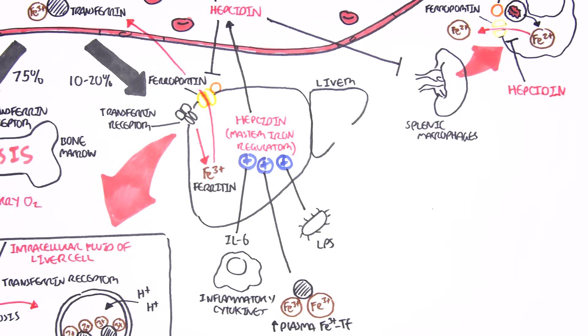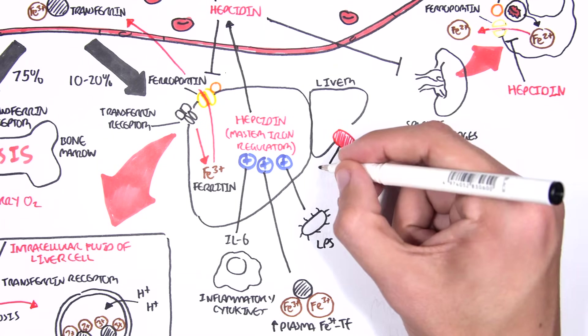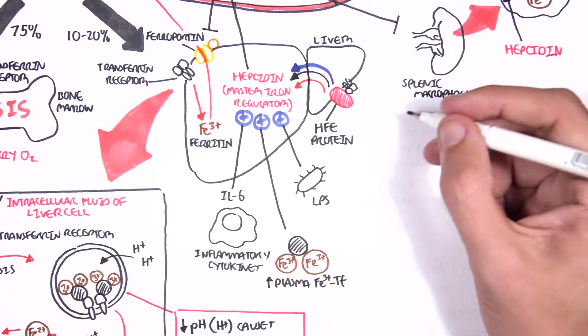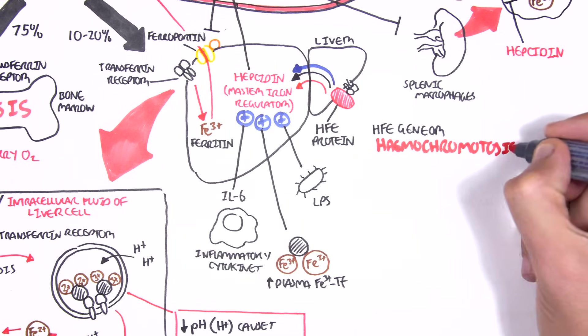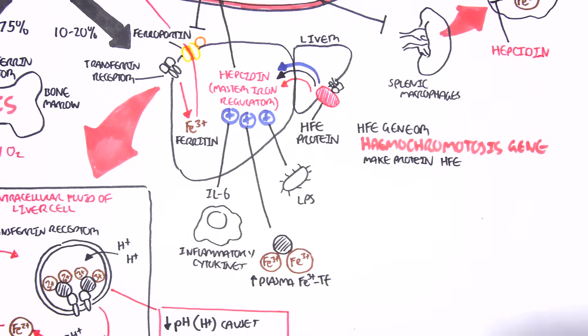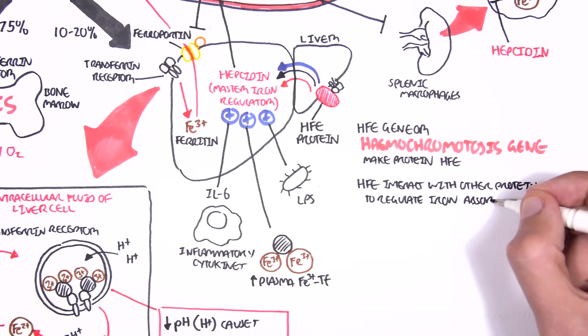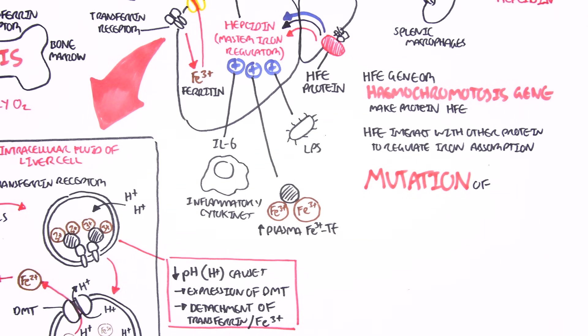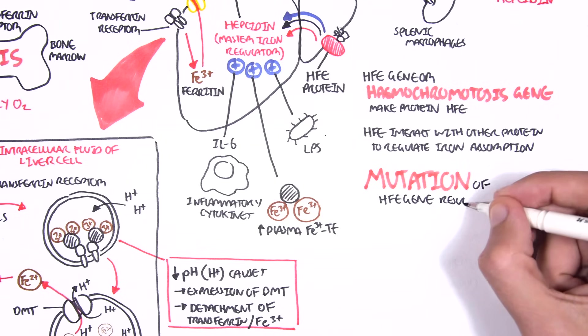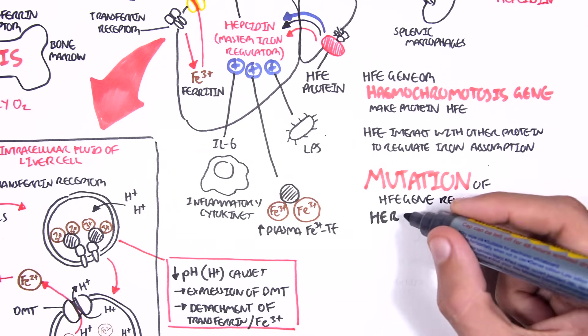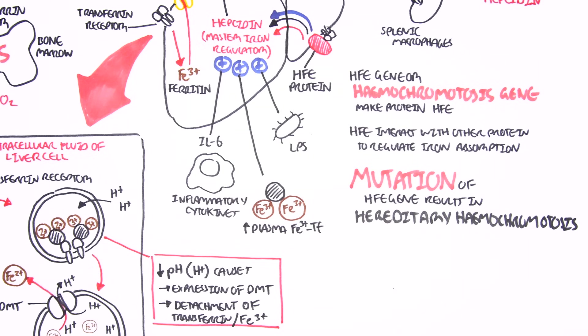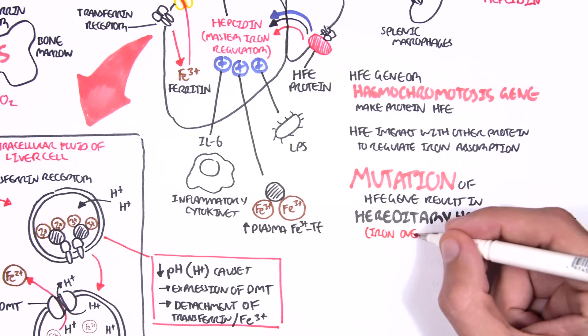But, the main regulator of hepcidin production is the HFE protein. Now, the HFE gene, also known as the hemochromatosis gene, makes the HFE protein. What does the HFE protein do? Well, the HFE protein will interact with other proteins to regulate iron absorption through the production of hepcidin. If there was a mutation in the HFE protein, so a mutation of the HFE gene will actually result in a disease known as hereditary hemochromatosis. And this disease is where you have iron overload, when you have too much iron in the tissues.